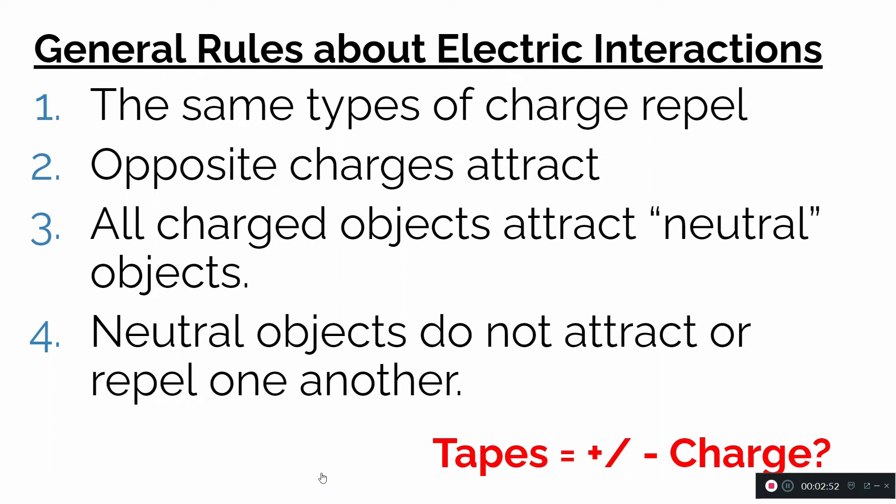Now that we have these rules, before we can put it all together, we need to figure out the charge identity of each of the tapes. The top tape and the bottom tape have different types of electric charge, and we saw that they behave differently in terms of the interactions we observed.